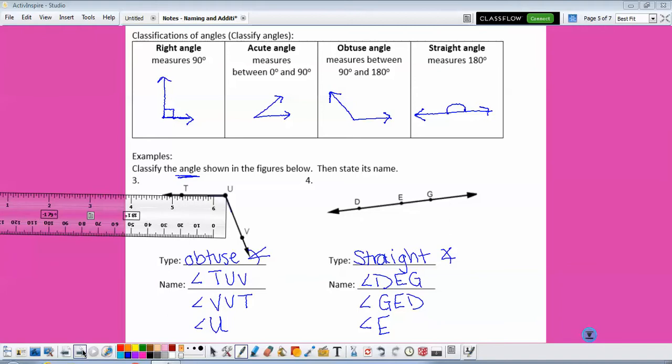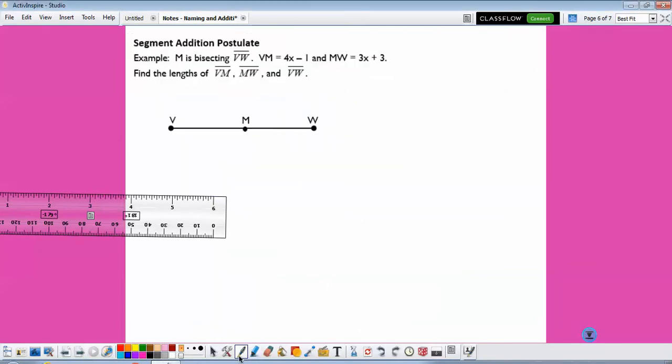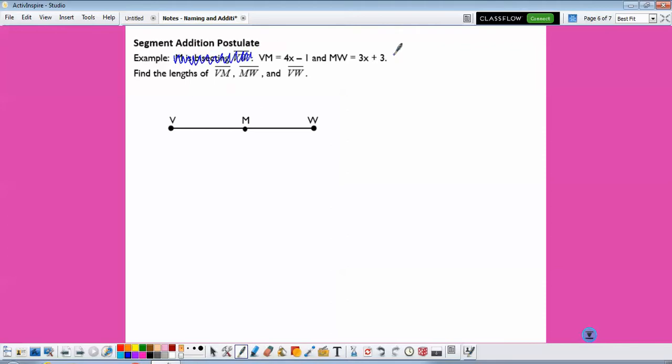All right, so let's move on to the addition postulates. So I made a typo when I printed your papers, and we're going to ignore this, and we're going to say that VW equals 44. And we're not going to have to find VW down here. All right, so it tells us that MV is 4X minus 1, MW is 3X plus 3, and we just said VW, the whole thing,